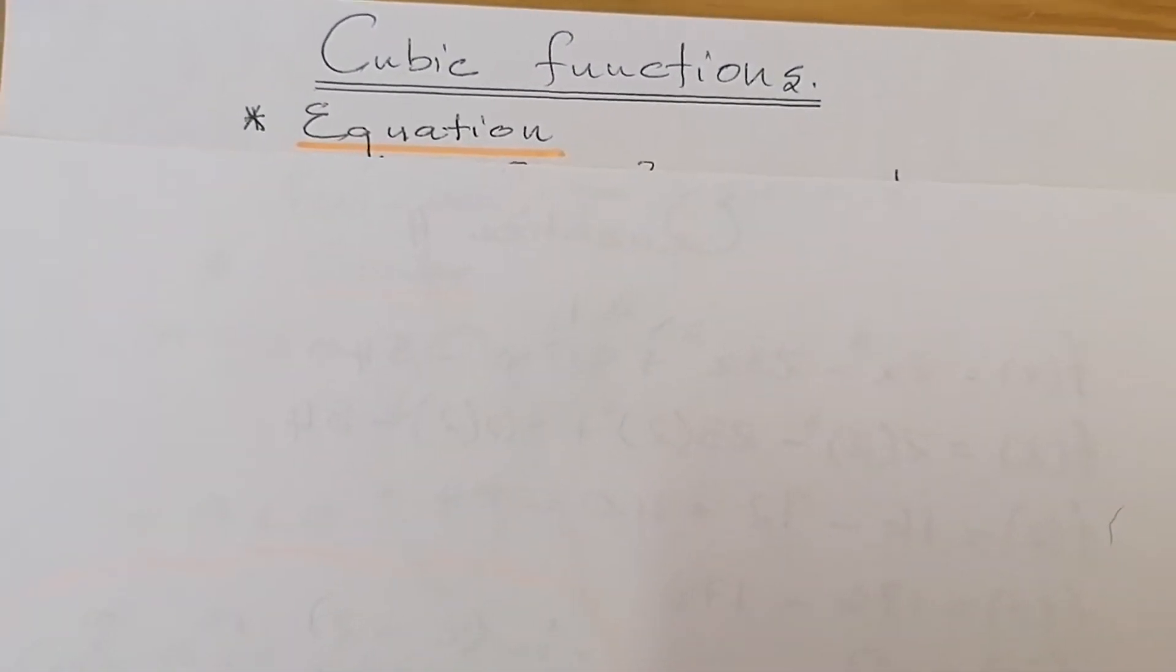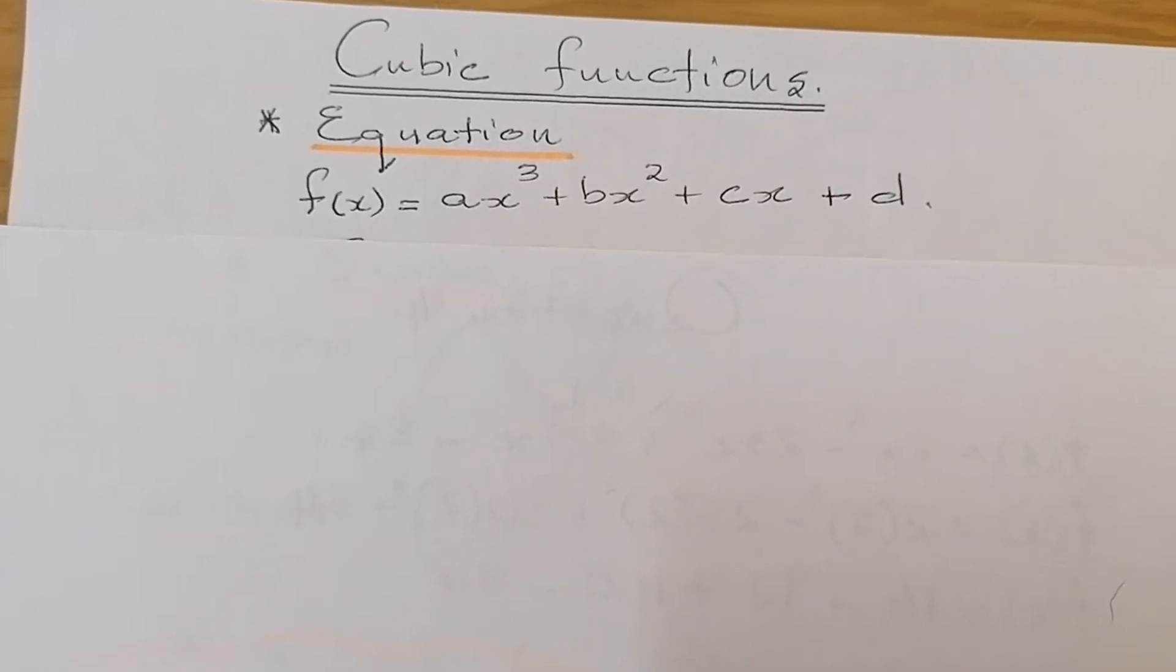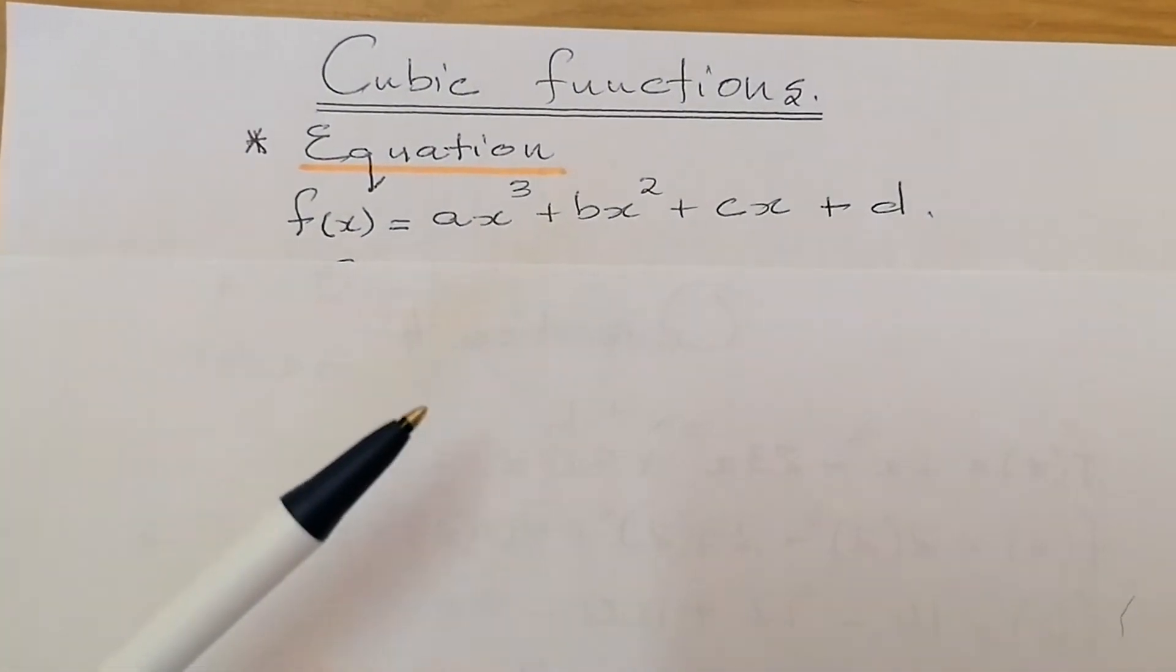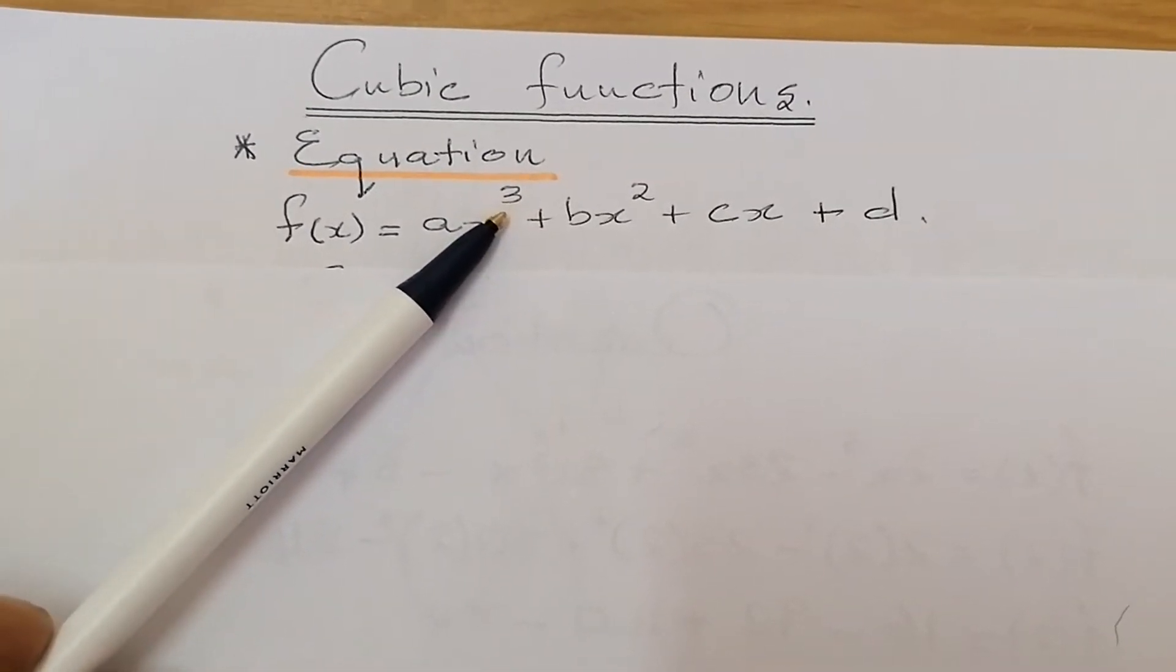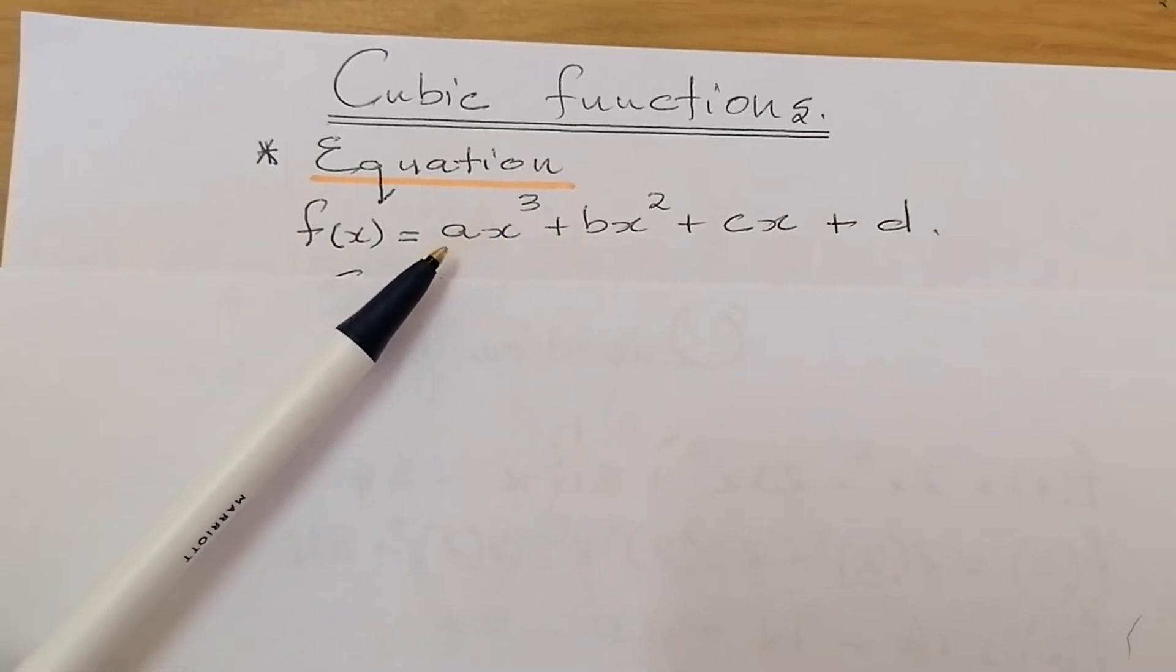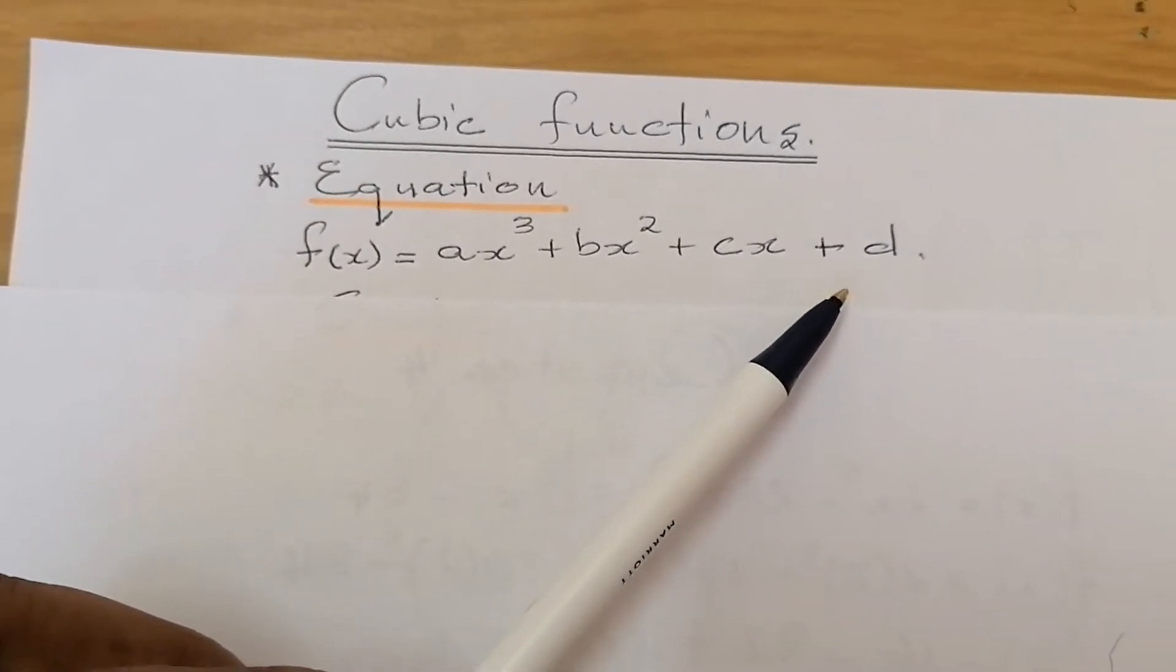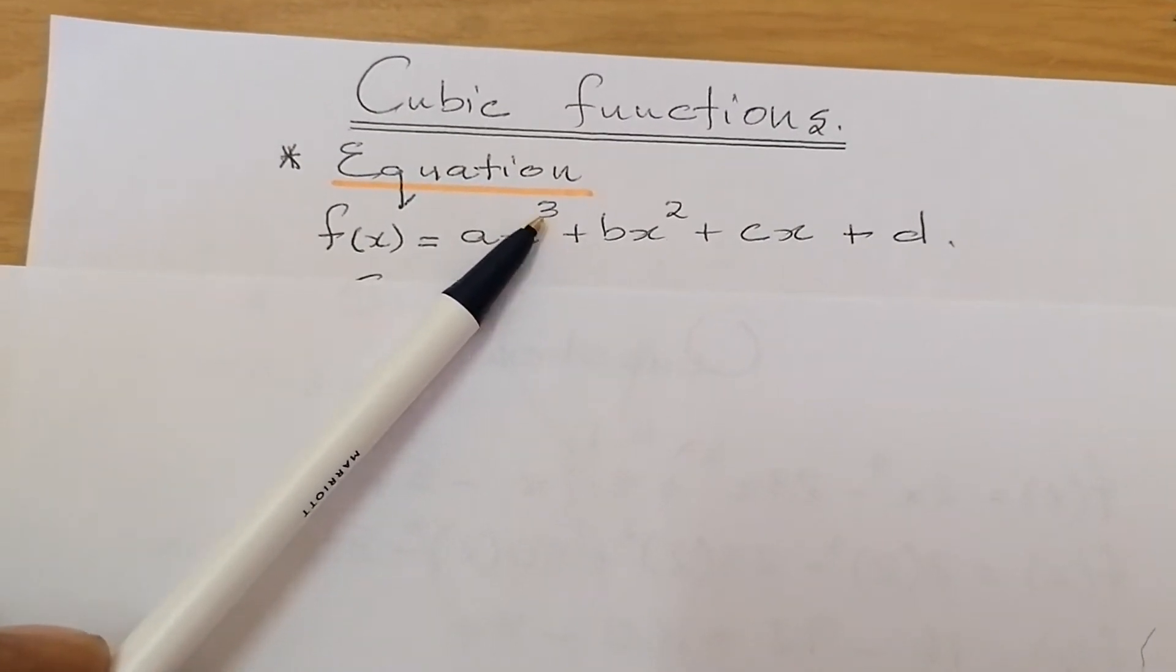the equation that defines the cubic function will always be in a form where the degree of the exponent, the highest degree, would be power 3. Now, in this case, I've got ax to power 3 plus bx squared plus cx plus d. Once you see the variable x raised to power 3, you know that we are dealing with a cubic function.